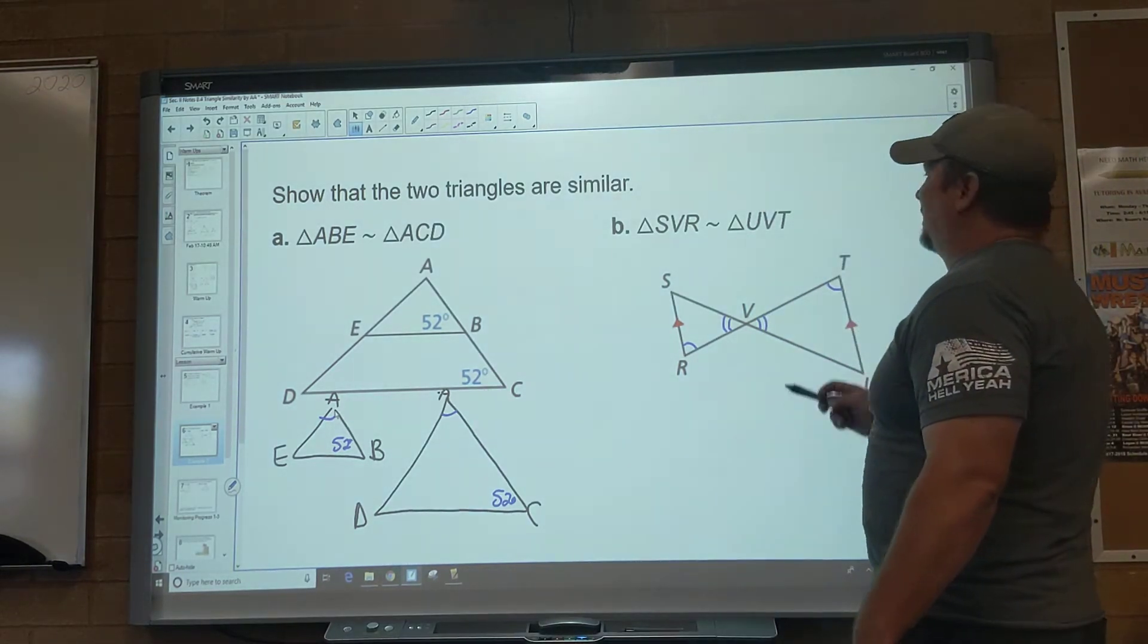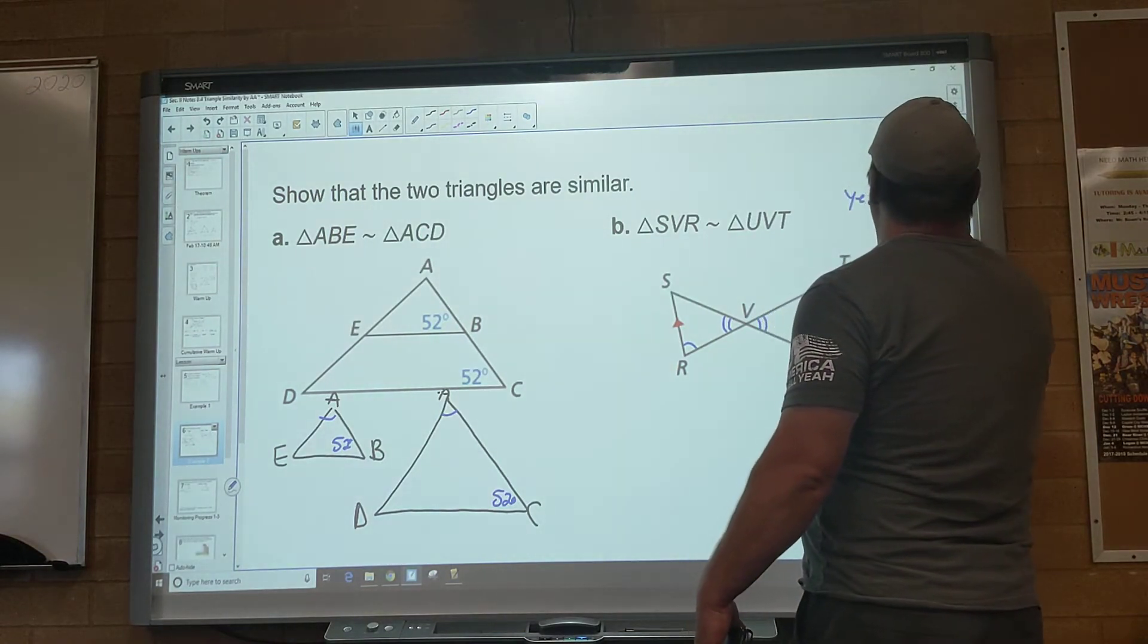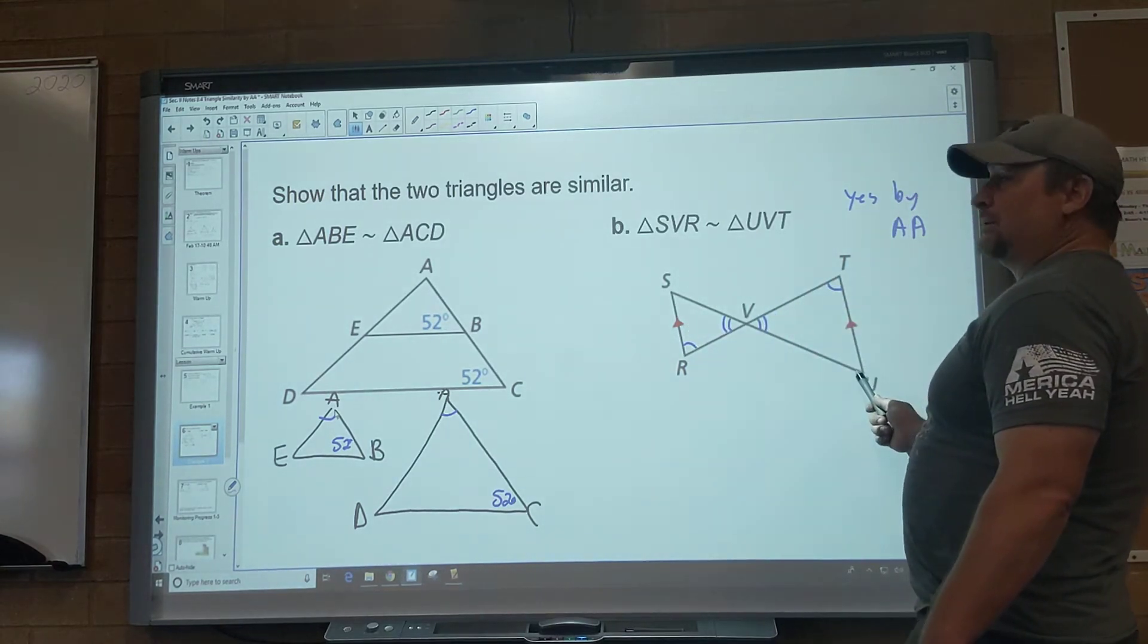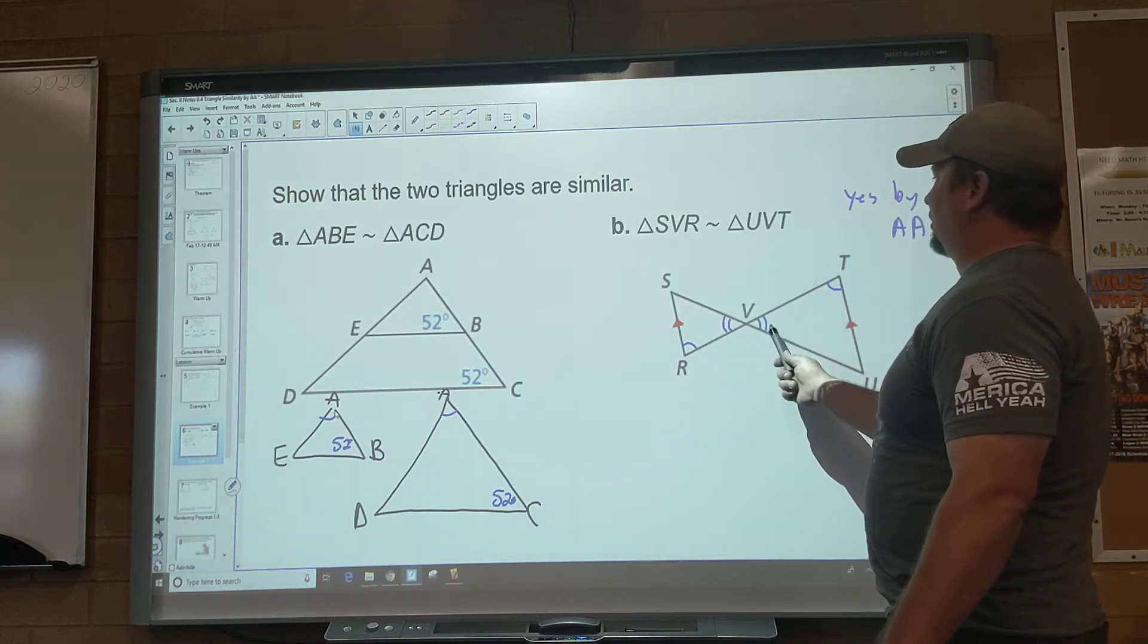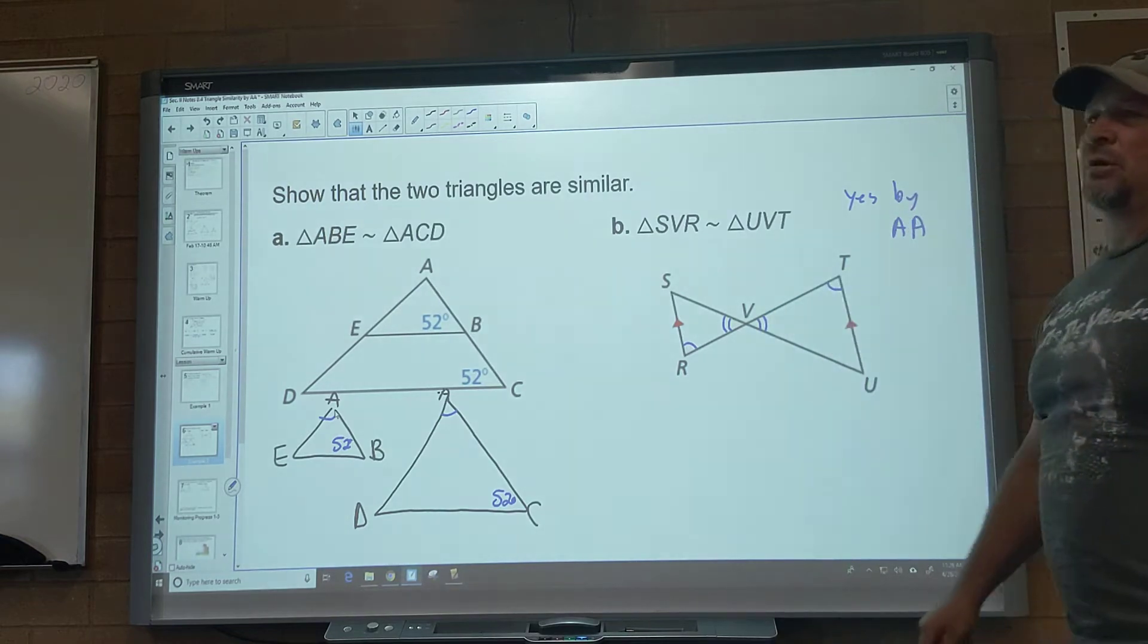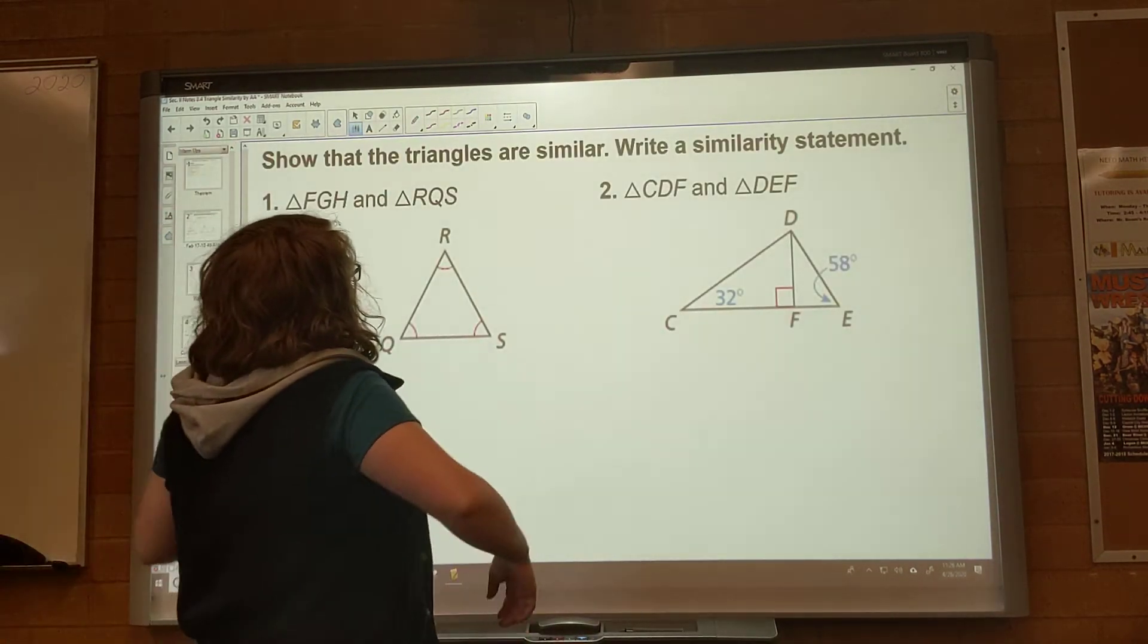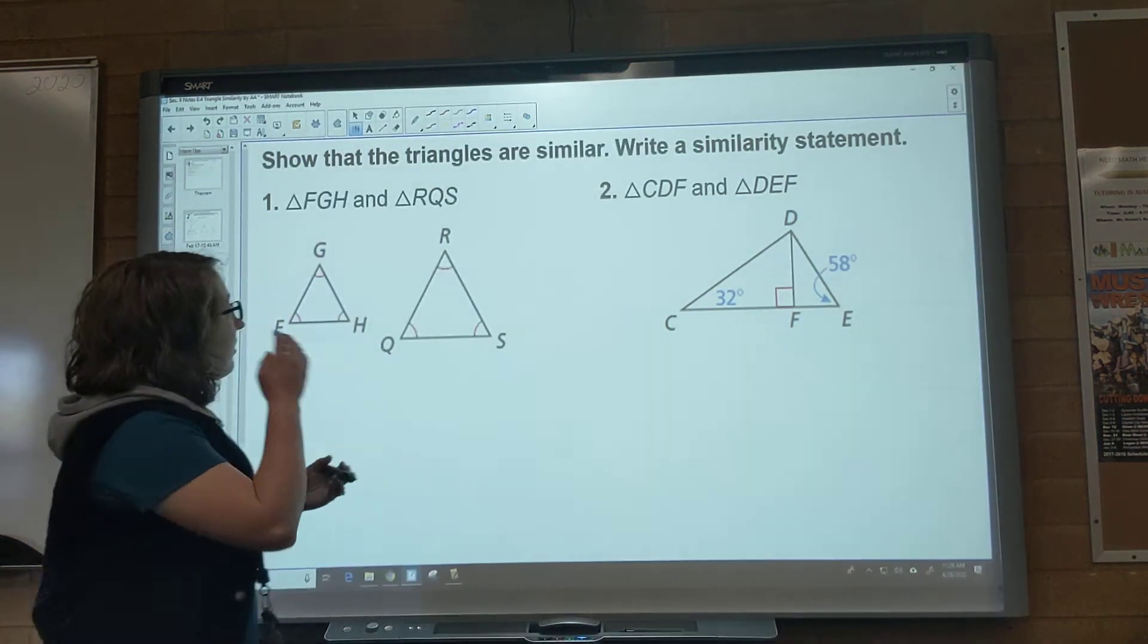Let's just make sure that the letters do match up though. So yes, by angle, angle. And now let's make sure they match up. S had nothing. So my U better have nothing. It does. My V has two marks. My V has two marks. My R has one mark. My T has one mark. So it did work. It did work just like Ms. Perez's. Okay? Okay. Same thing. We're going to show that the triangles are similar and we're going to write a statement on this one.